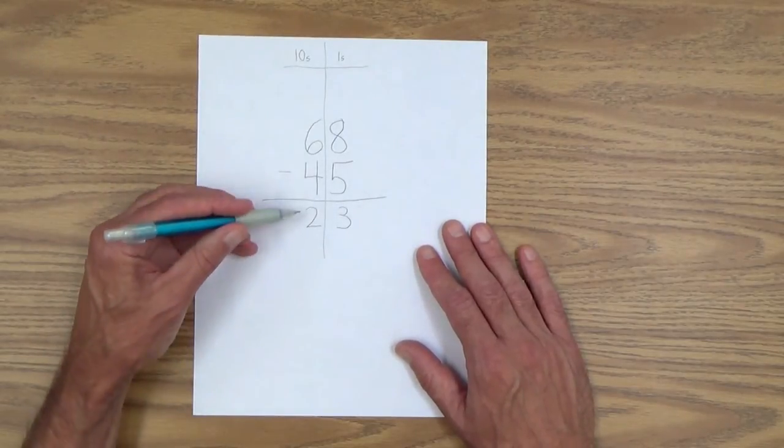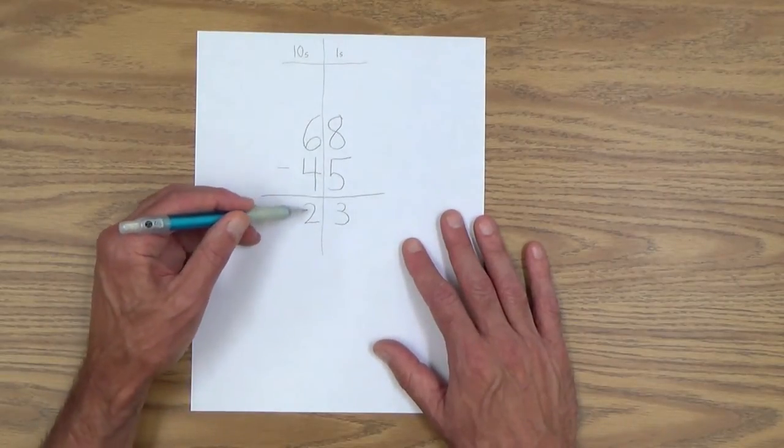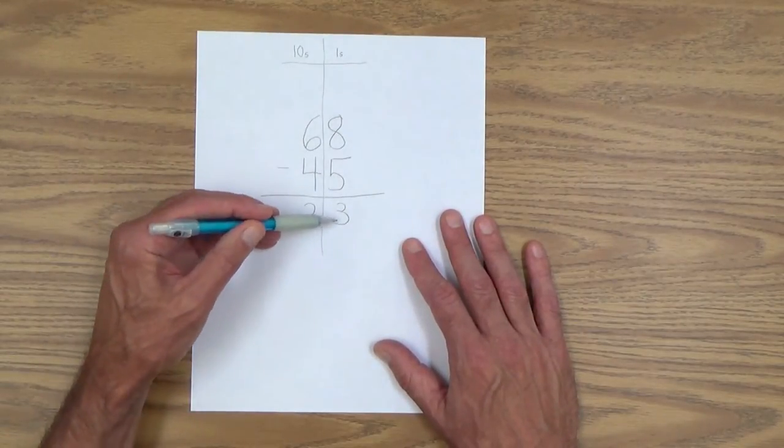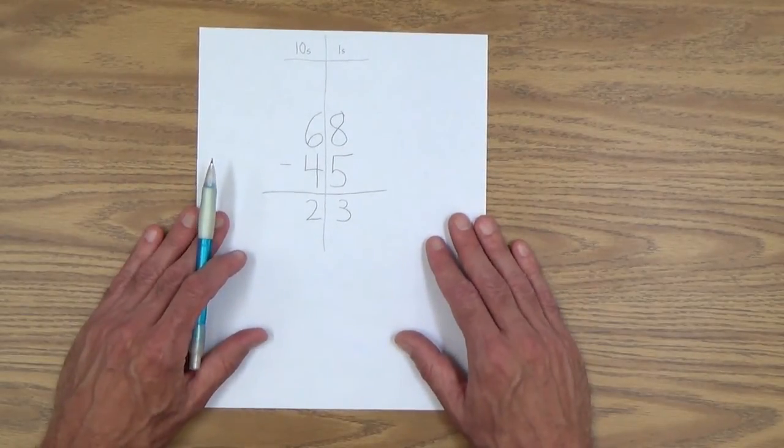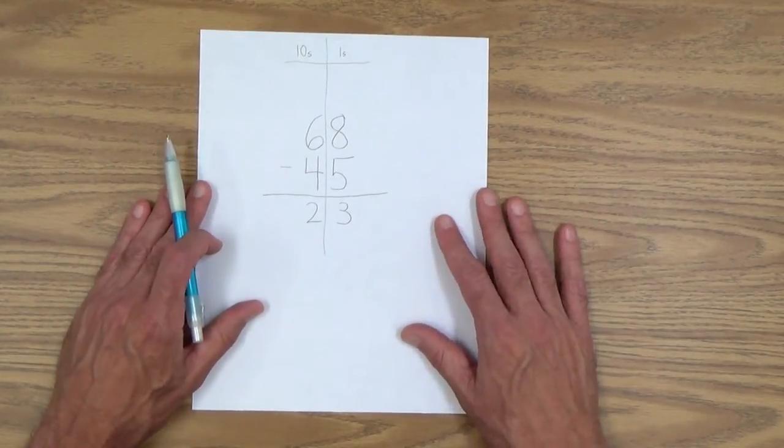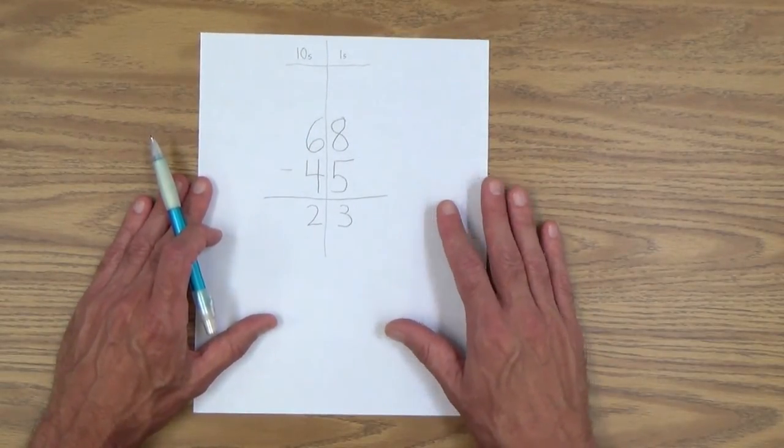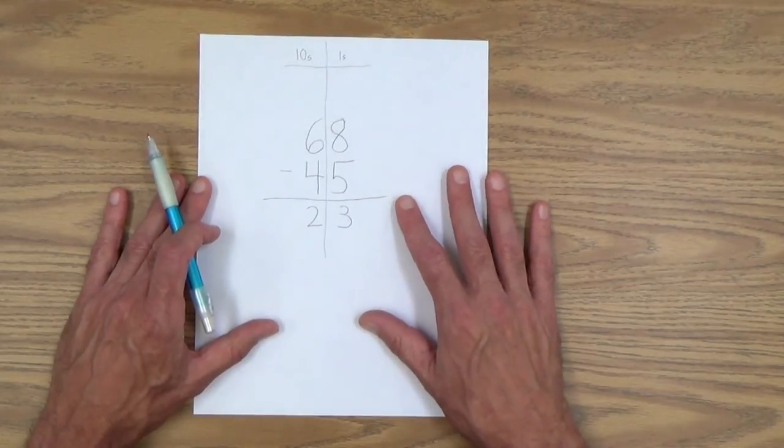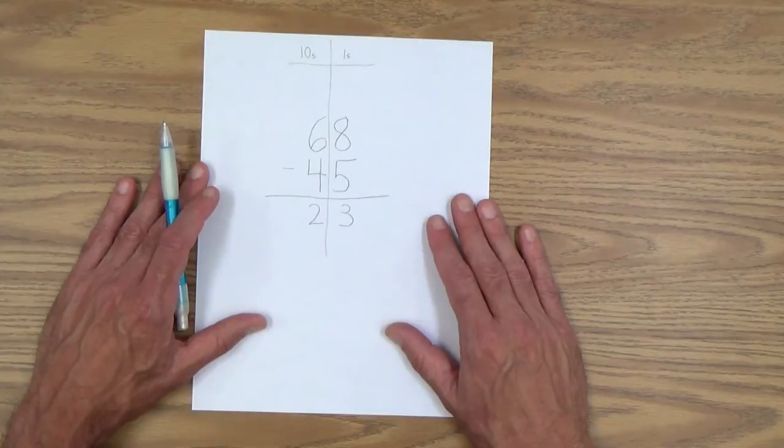And of course, you can, if she doesn't know it already, she probably does, you can point out that 23 is two tens and three ones. So like so much math, it's following steps. But at the same time, your child needs to understand the underlying theory behind what we're doing here.